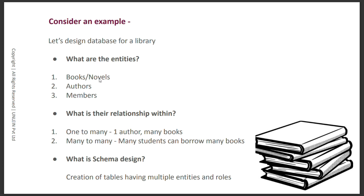What are the entities in the library? Books and novels — those you read. Authors — those who have written books. And members — those who are part of the library, across sections like fiction and science. What are the relationships? First, a one-to-many relationship: one author can write many books. And a many-to-many relationship: many members can borrow many books.